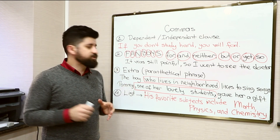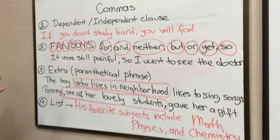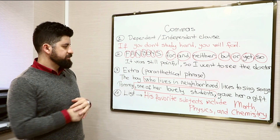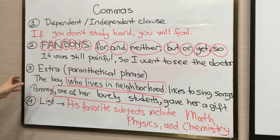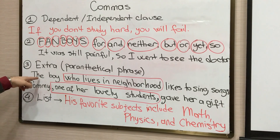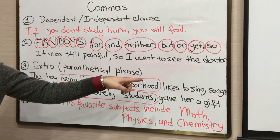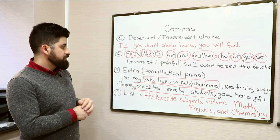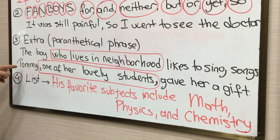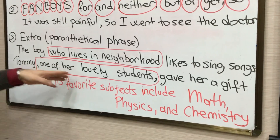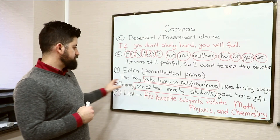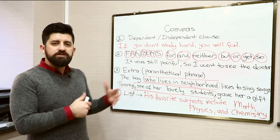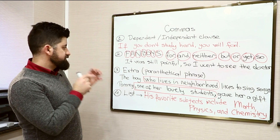The third category is the extra or parenthetical phrase. I'd like you to pay attention to these two examples because there is a subtle difference between them. First: 'The boy who lives in the neighborhood likes to sing songs.' Second: 'Tommy, one of her lovely students, gave her a gift.' The phrase 'one of her lovely students' is a parenthetical phrase. How can we understand whether a phrase is extra or not?